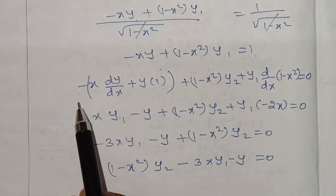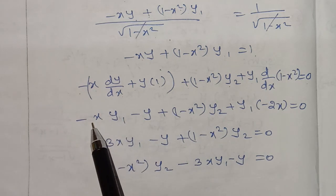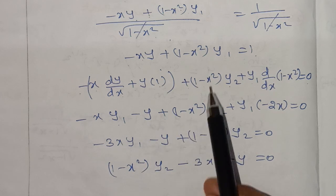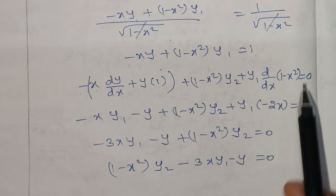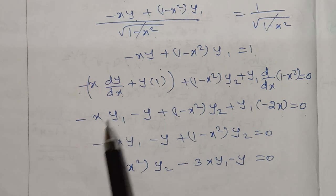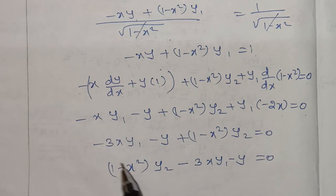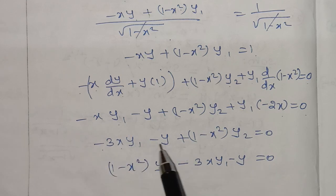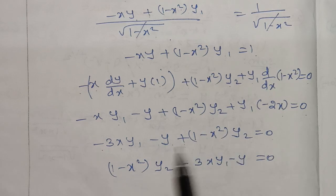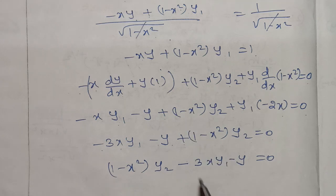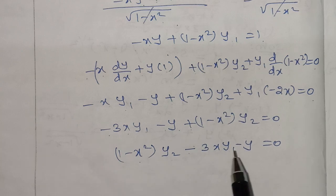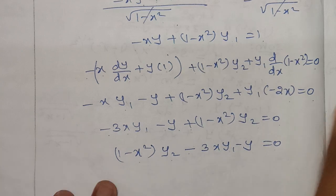Differentiating the right-hand side gives 0. Expanding: (1 minus x²)·y₂ minus 2x·y₁ minus x·y₁ minus y equals 0, which simplifies to (1 minus x²)·y₂ minus 3x·y₁ minus y equals 0. This is the answer.